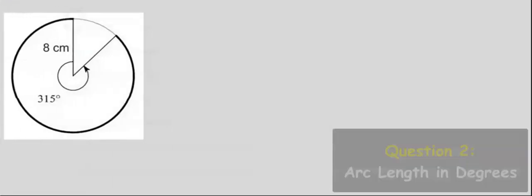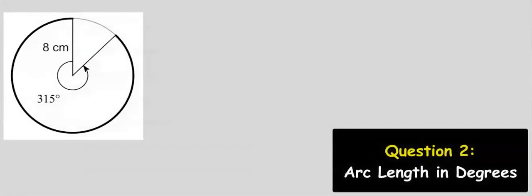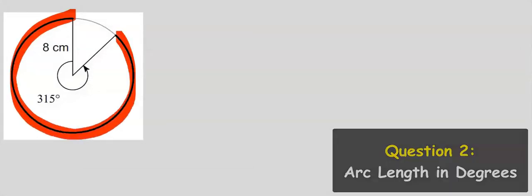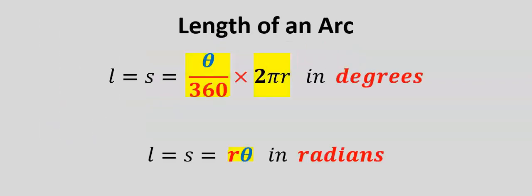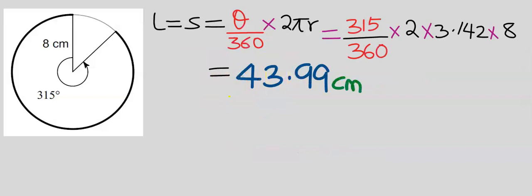Next, let's find the length of this arc. The first step is to consider the central angle, which is in degrees. Next, choose the right formula for central angles in degrees. If you substitute and solve carefully, the length of the arc is 43.99 centimeters.